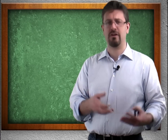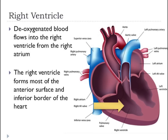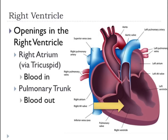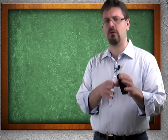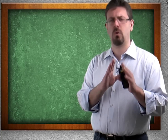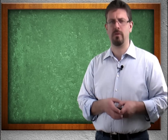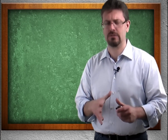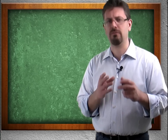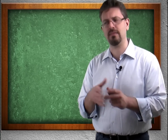Speaking of the right ventricle — that's our next chamber. Deoxygenated blood flows from the right atrium to the right ventricle. The right ventricle forms most of the anterior surface and inferior border of the heart. Openings into the right ventricle include the right atrium via something called the tricuspid — we will cover valves later on in its own video. It lets blood out through something called the pulmonary trunk. We'll have an entire series of videos on blood vessels later.